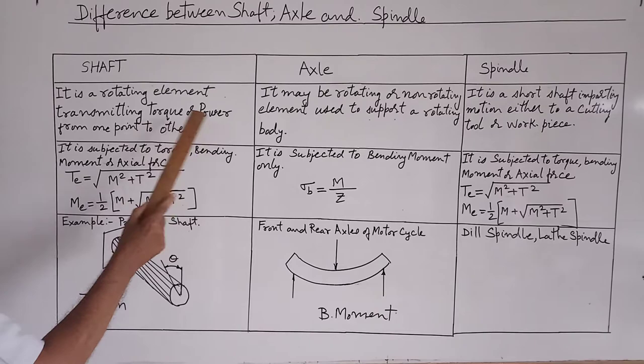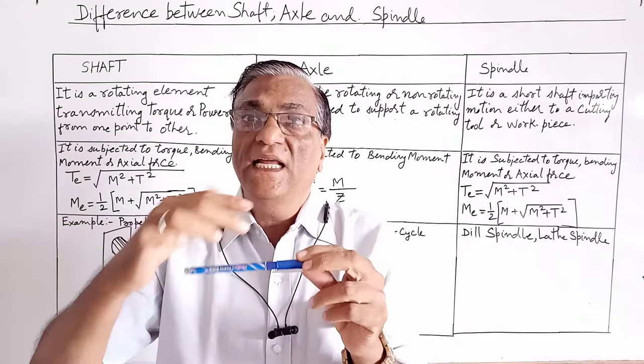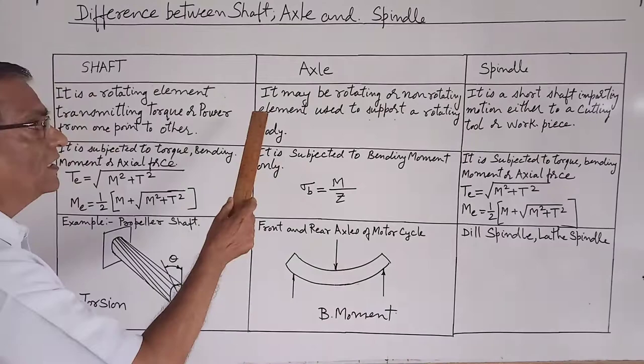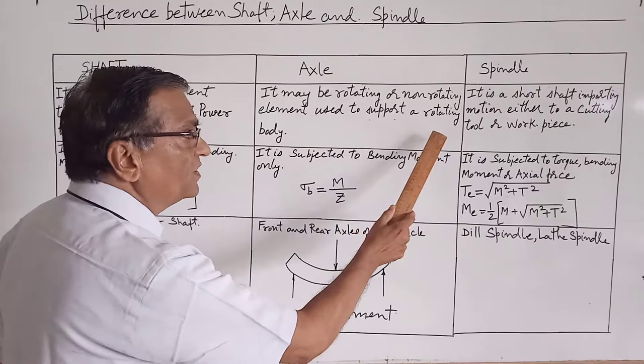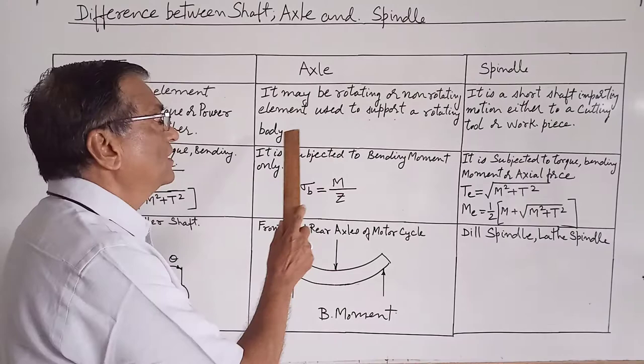Whereas axles are used to support the rotating element like wheels or drums. So it may be rotating or non-rotating element used to support the rotating body. Now they are subjected for bending moment only or they are used to support the rotating member only.